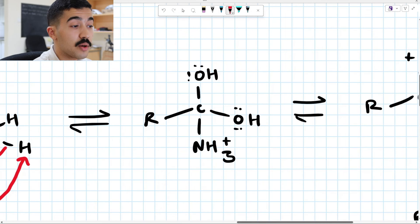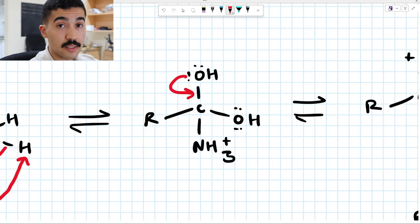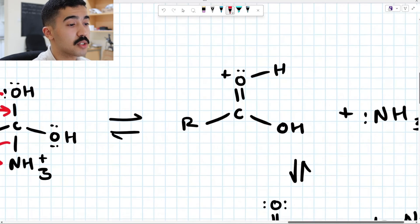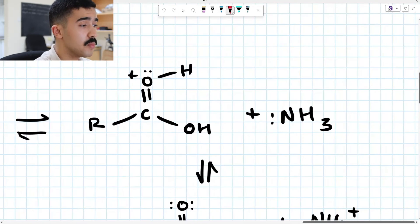Now, to kick out NH3 plus, either one of these OH groups can build a double bond. So up to you. I'm going to choose this one up here. You're going to build a double bond between C and OH. Then you're going to kick out NH3. When you do that, you're basically going to have this protonated carboxylic acid group or protonated carbonyl of the carboxylic acid, rather.